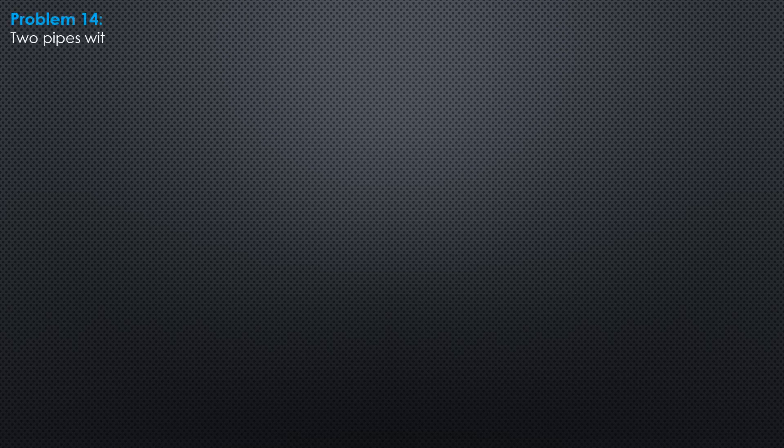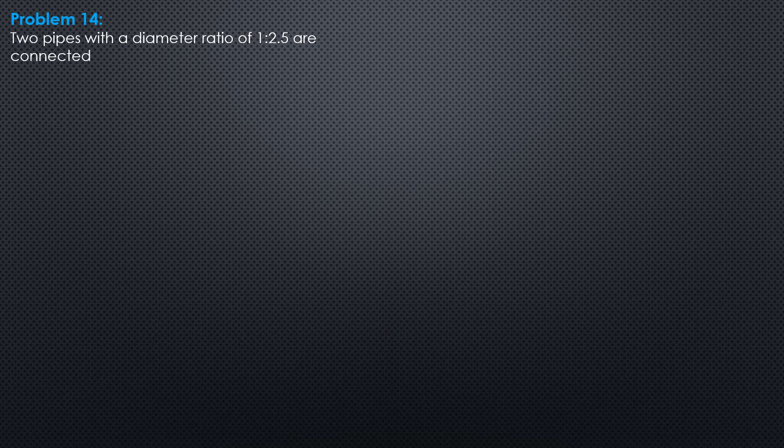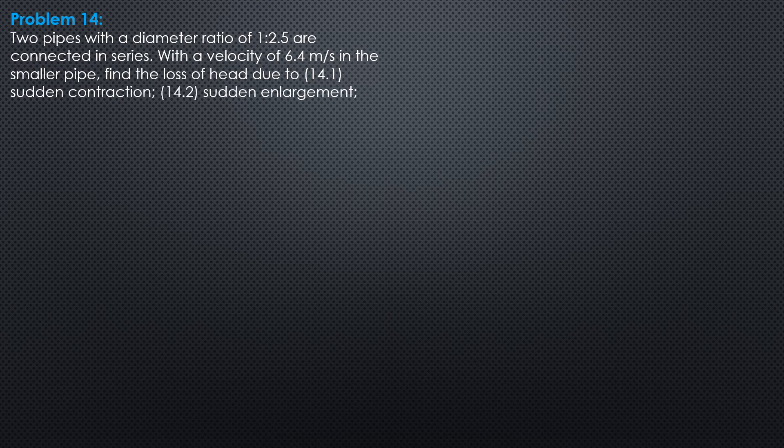Example 14. Two pipes with a diameter ratio of 1 to 2.5 are connected in series. With a velocity of 6.4 meters per second in the smaller pipe,